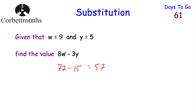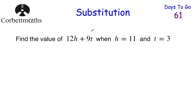Because 8 times w — 8 times 9 is 72 — and 3 times y is equal to 15, and 72 take away 15 is equal to 57. And that's it. Now let's have a look at our next question. This one is for you to try, so feel free to press pause and try this question out yourself.